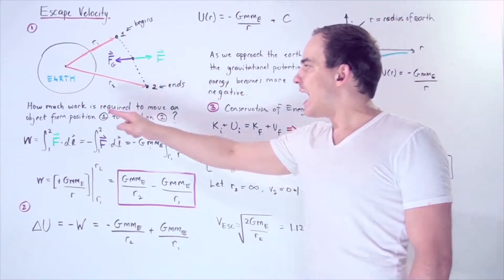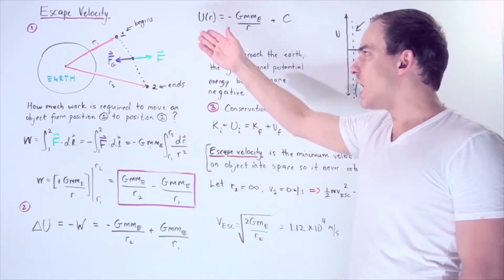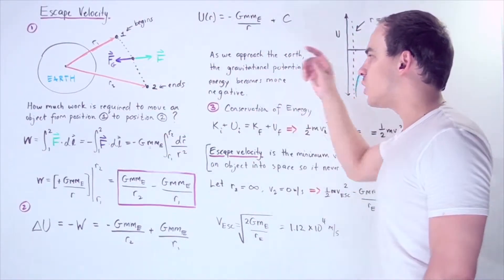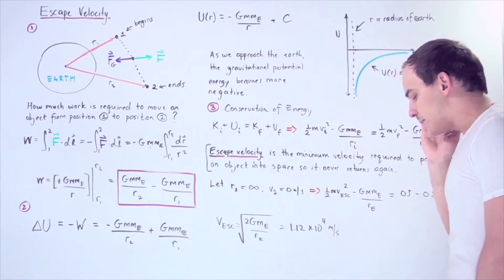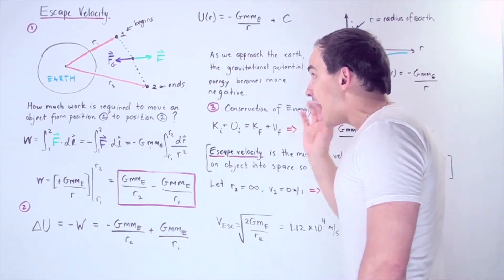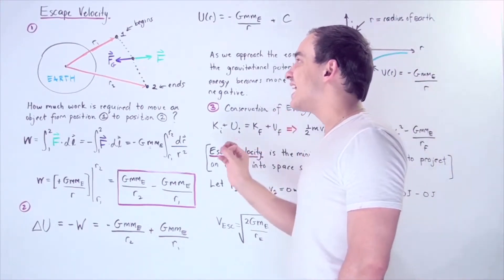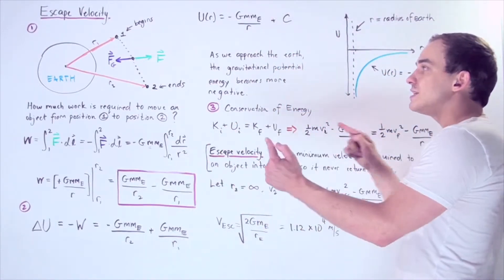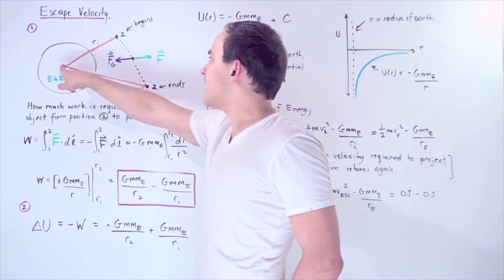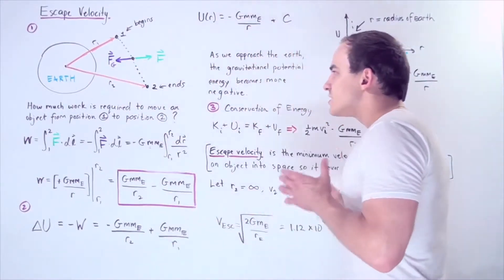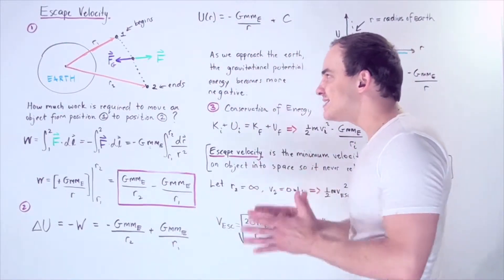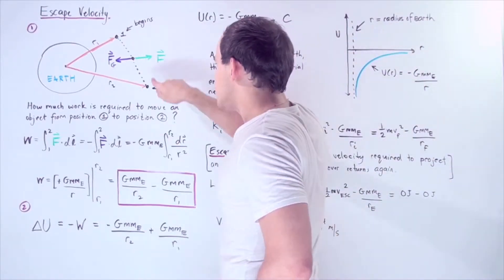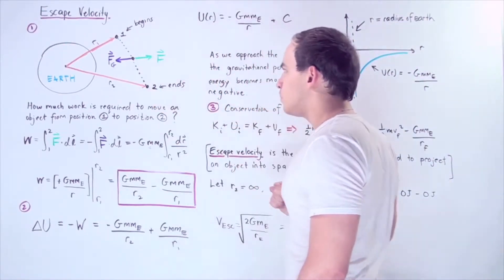We want to calculate how much work is required to move the spaceship from position 1 to position 2 along the pathway. Note that our force of gravity is not constant — it depends on the inverse of the square of the distance between the spaceship and the center of the Earth. So we need to integrate the dot product of the force and displacement from position 1 to position 2.